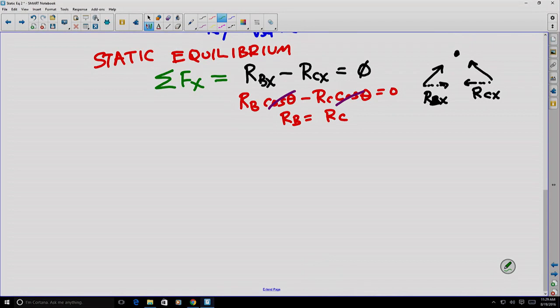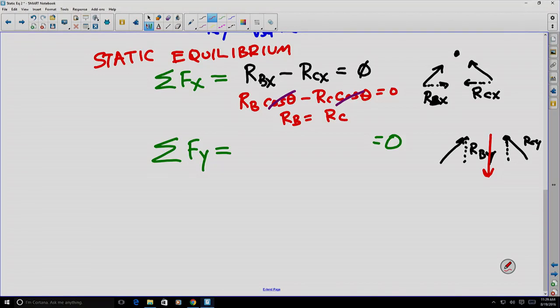Let's use another equation of static equilibrium: the sum of forces in the Y direction equals zero. What are those forces? We have RBy pointing up, RCy pointing up, and the 50-pound cauldron pointing down. Let's put those together: RBy + RCy - 50 pounds must equal zero.